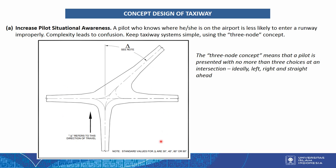At an intersection, as the aircraft approaches, the pilot will see three choices: turn left, turn right, or go straight ahead. For the straight-ahead direction, there are standard delta values of 30 degrees, 45 degrees, 63 degrees, or 90 degrees — which correspond to turning left or right. So don't make the intersection complicated.